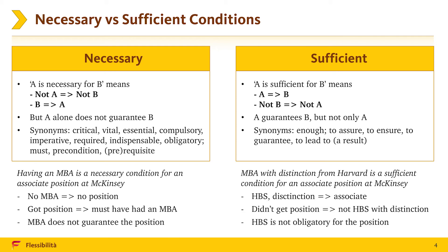Continuing our hypothetical McKinsey story, let us have a look at the following example: MBA with distinction from Harvard guarantees an associate position at McKinsey. Based on this statement, we can conclude that if you have an MBA with distinction from Harvard, you will get an associate position at McKinsey. If you don't, you still might get it, but most probably other conditions will apply. And if you did not get an associate position at McKinsey, you had not received an MBA with distinction from Harvard either. So much for sufficient conditions.